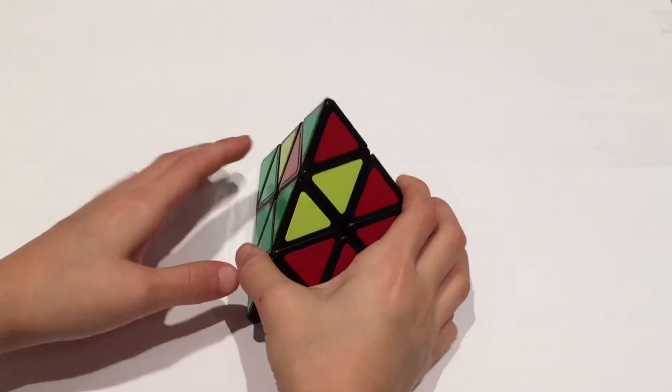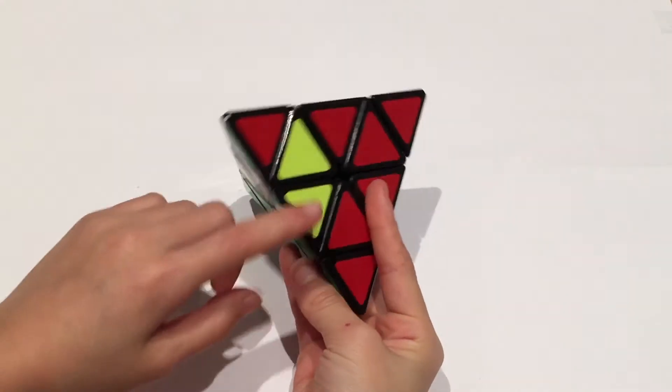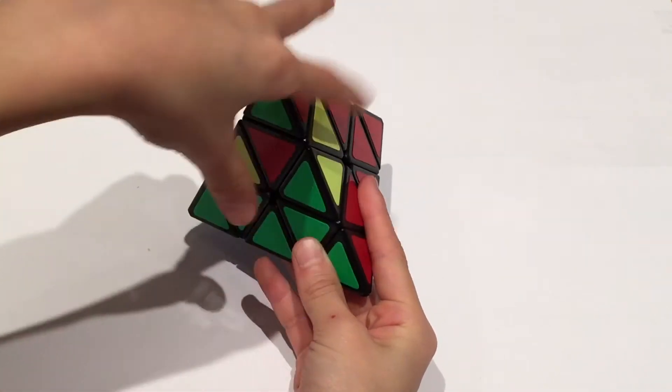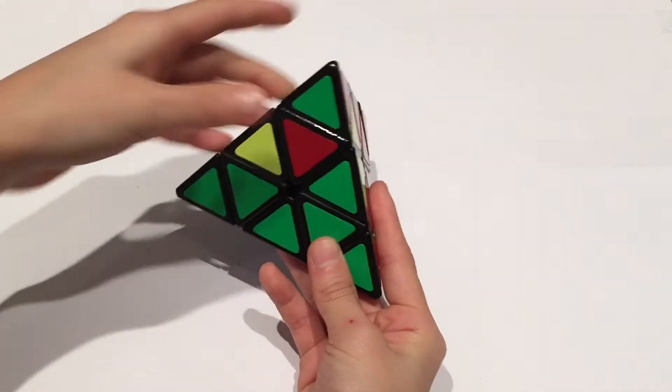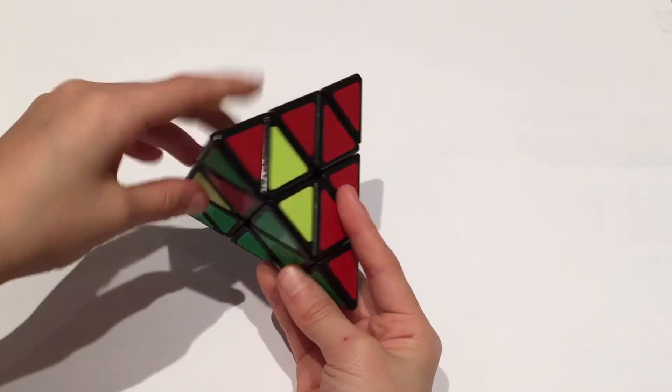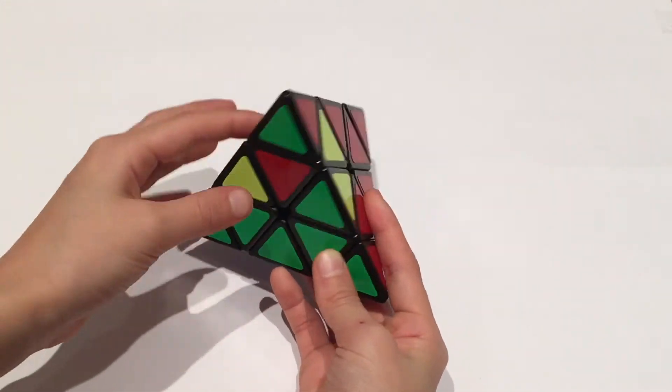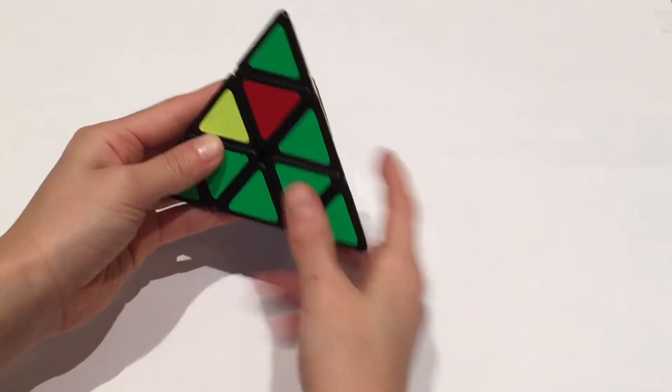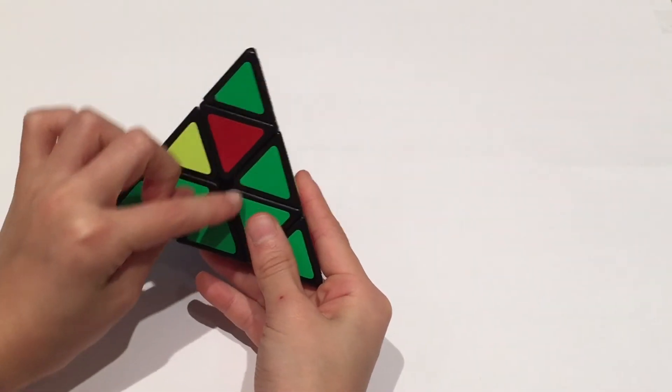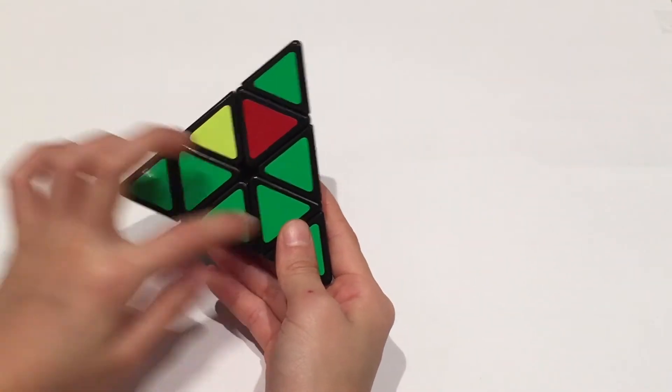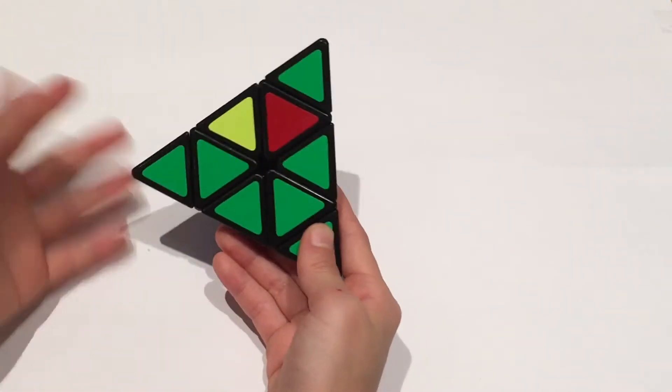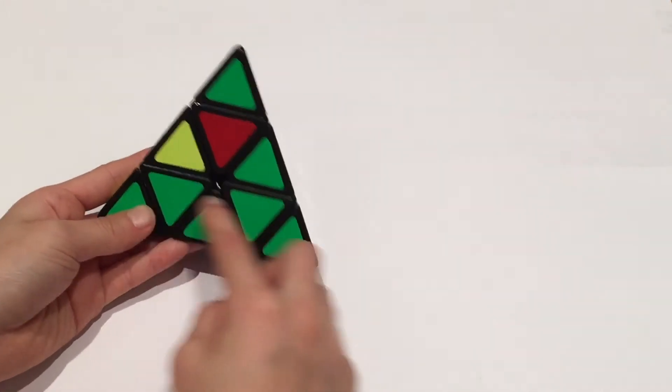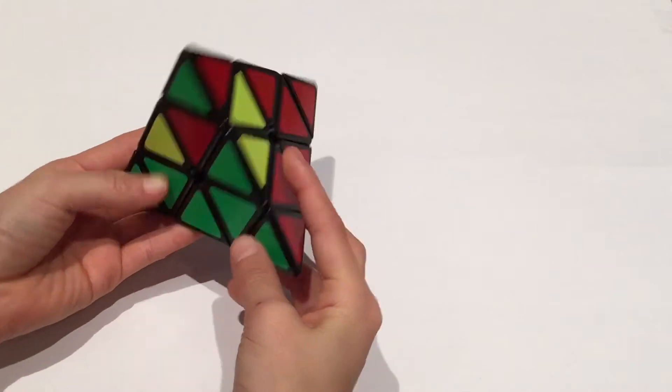So for the next step we're going to be getting basically this whole area so that your Pyraminx will be solved, because after that there's no more steps. So you want to find these edges that have at least one color on its right side. So here we have green on the green side but yellow is here not red.